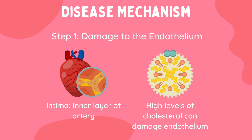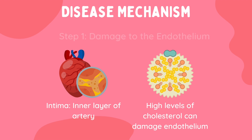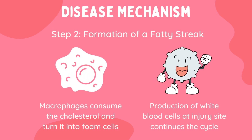The immune response causes white blood cells to travel to the area and form an inflammation. Following this, a fatty streak is one of the first visible signs of the disease. It is formed from dead cells at the injury site by the white blood cells, also called monocytes, turning into macrophages. Macrophages will surround and kill any invading cell.